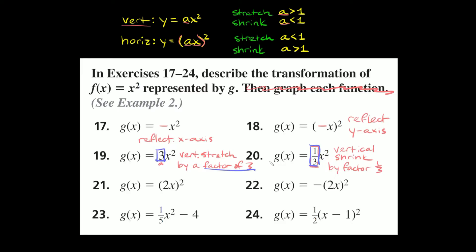When you're dealing with horizontal stretching or shrinking, it's a little different — you have to take the reciprocal of whatever a number you have. Problem 21: g of x equals 2x, in parentheses, squared. We have parentheses, so this is horizontal. The a number is 2. For horizontal it's the opposite of vertical: if your number is smaller than 1 it's a stretch, if it's bigger than 1 it's a shrink. Since 2 is bigger than 1, this is a horizontal shrink by a factor of one-half — the reciprocal of 2.